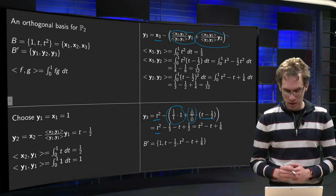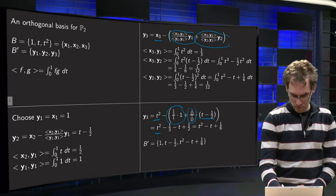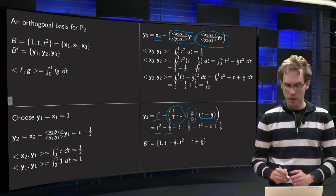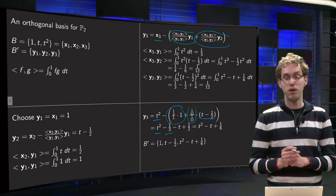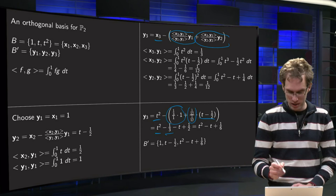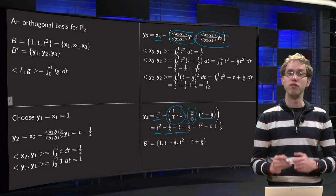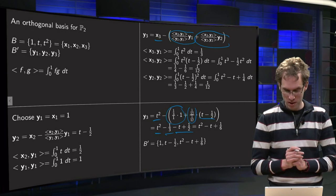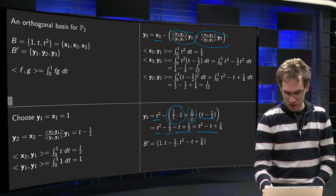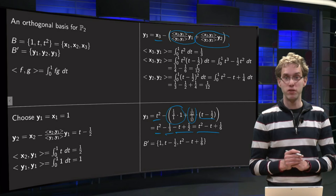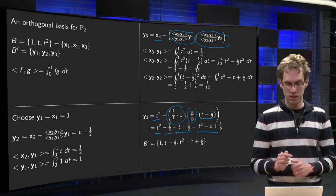t squared minus 1 over 3 times 1, so minus 1 over 3, and then 1 over 12 over 1 over 12 is 1, so minus t minus minus half, so plus one half. And we finally end up with t squared minus t plus 1 over 6 as our third basis factor.